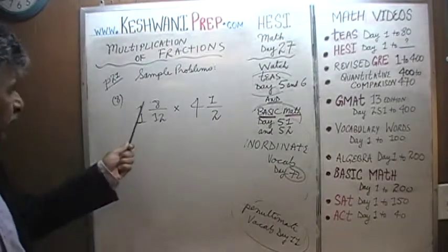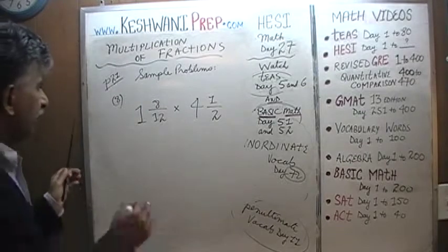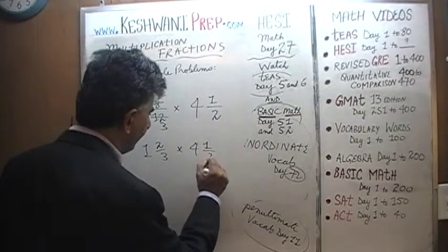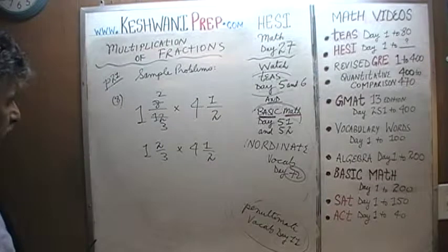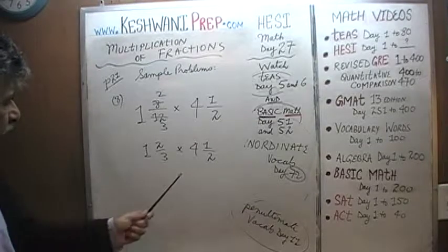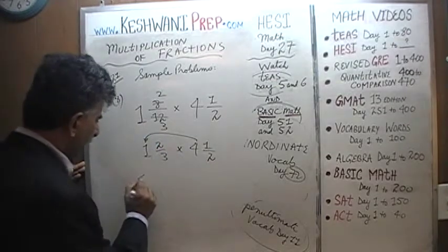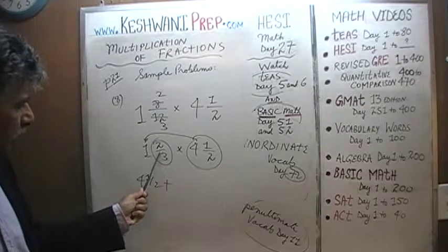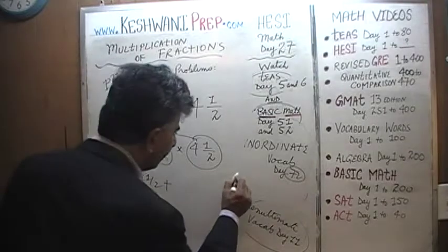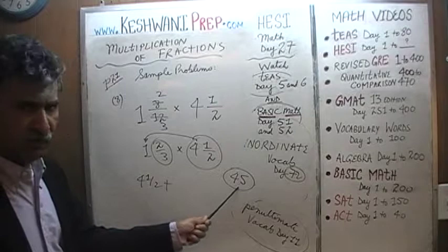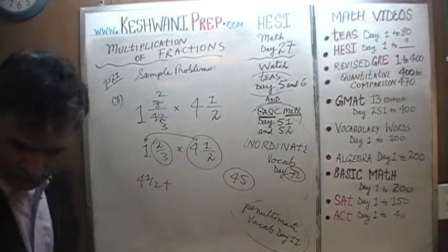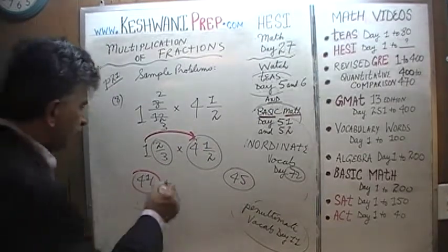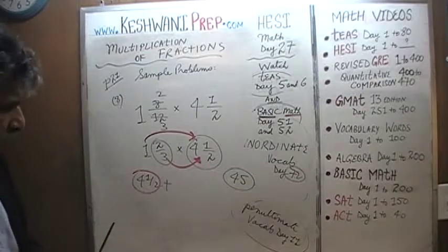The very first thing we're going to do: I find it annoying that it's 8 over 12. If you can reduce it, reduce it right away — divide top and bottom by 4 — so it becomes 1 and 2 thirds times 4 and a half. Now, 1 times 4 and a half is just 4 and a half. Now we need to figure out 2 thirds of 4 and a half. Think of 4 and a half as 45 — it makes it easier.